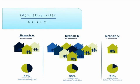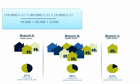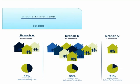Here's an example. Branch A administers the PPI to 15,000 clients and finds that 47% of them live below the poverty line. Branch B surveys 45,000 clients and finds a poverty rate of 35%. Branch C surveys 3,000 clients and finds a poverty rate of 21%. This organization estimates that 37.2% of all clients live below the poverty line.